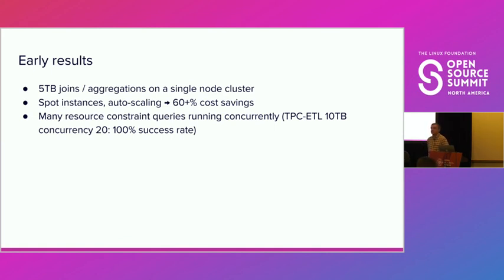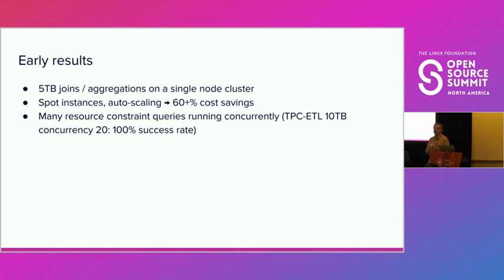Today, what Trino does by default — it doesn't add an exchange. In theory, you may run into a problem with skew or a task that is too big. Currently, there is a configuration knob that allows you to change this behavior, telling Trino to always add an exchange whenever it sees an aggregation or a join. This adds an extra cost. This is something we plan to optimize by applying adaptive techniques — we can be optimistic and run it without an exchange, and if we run into a problem, we'll try to split it.